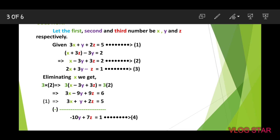Now subtract. When subtracting, signs must be changed: positive becomes negative and negative becomes positive. Subtracting from equation 1 (3x plus y plus 2z equals 5): 3x minus 3x cancels, minus 9y minus y gives minus 10y, and 9z minus 2z gives 7z, and 6 minus 5 is 1. We get equation 4: minus 10y plus 7z equals 1.